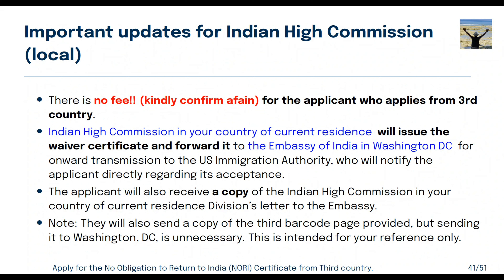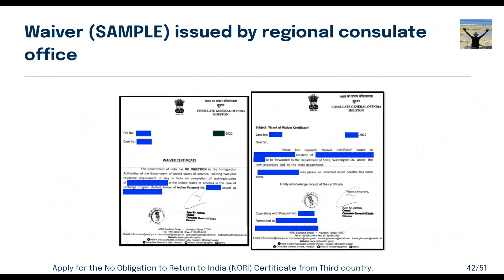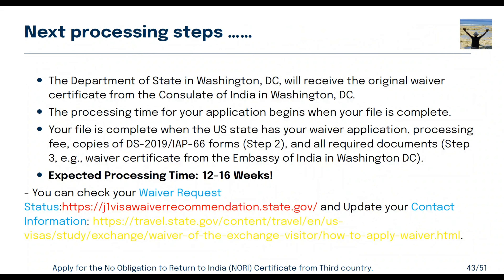Check with your local Indian High Commission whether they charge a fee for Stage 3. Once they receive your documents, the Indian High Commission will issue a waiver certificate and forward it to the Embassy of India in Washington DC for onward transmission to the US Department of State. They will also send you a copy of the waiver certificate for your reference, but note that the US Department of State will only accept the waiver certificate directly from the Embassy of India in Washington DC.